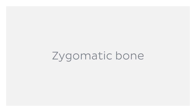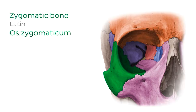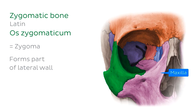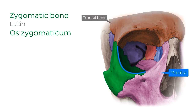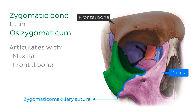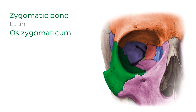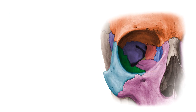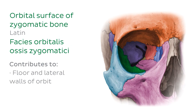Our next bone of interest is the zygomatic bone, also known as the zygoma. It is situated at the upper and lateral part of the face, lateral to the maxilla, and forms the prominence of the cheek, parts of the lateral wall and floor of the orbit, and parts of the temporal and infra-temporal fossa. It completes the orbital margin between the frontal and maxillary bones, articulating with the maxilla via the zygomaticomaxillary suture and with the frontal bone via the frontozygomatic suture. Following along the lateral orbital margin, you can feel a small elevation known as the orbital tubercle, which serves as an attachment point for several soft tissues of the orbit. Inside the orbital cavity, the zygomatic bone also contributes to the floor and lateral walls of the orbit, and the surface is known as its orbital surface.